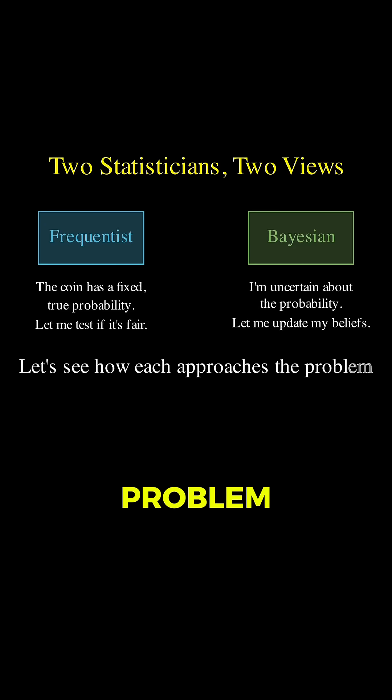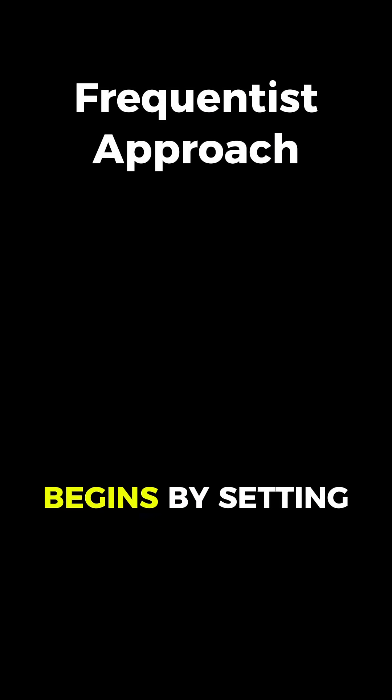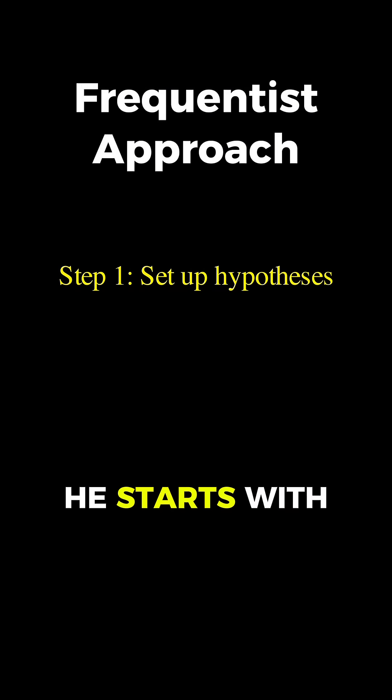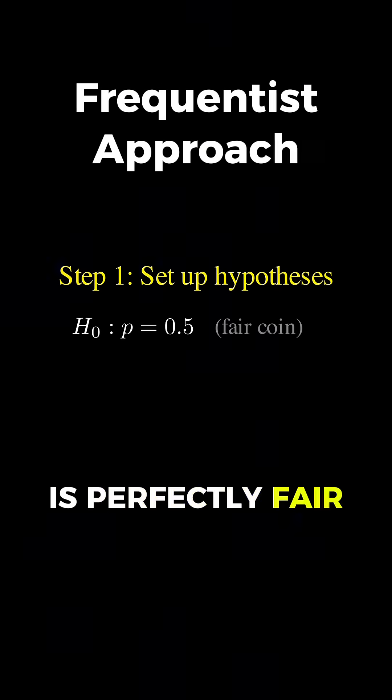Let's see how each approaches our problem. The frequentist begins by setting up what's called a hypothesis test. He starts with the null hypothesis, H0, which states that p equals 0.5, meaning the coin is perfectly fair.